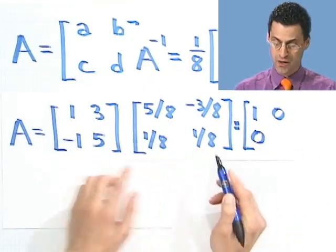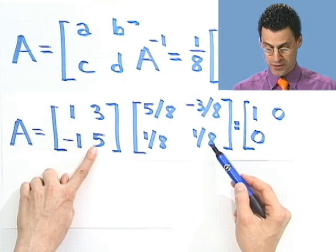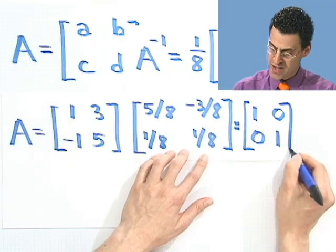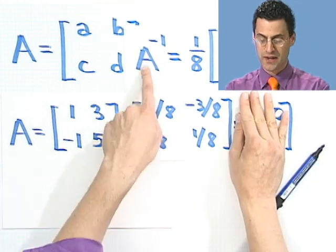And this last term should be a 1. Let's see. We have a minus and minus 3 eighths. That's just plus 3 eighths and plus 5 eighths. Well, 3 eighths plus 5 eighths is 1. So look, this actually checks. I get the identity back. So in fact, this really is the inverse of that.